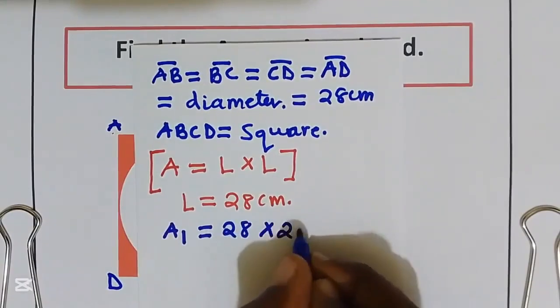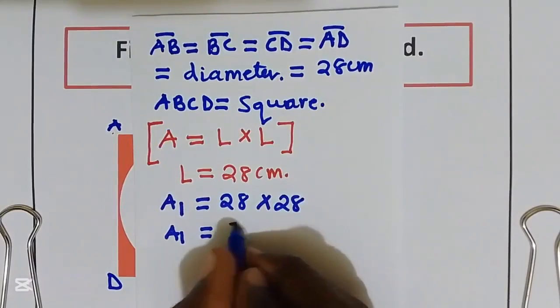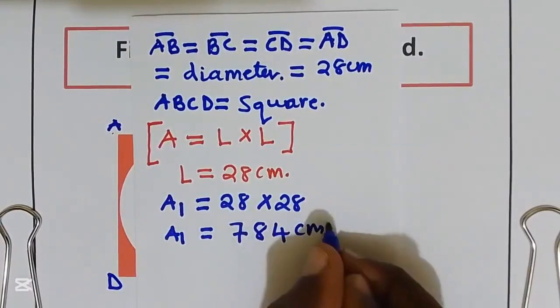Let's call area of the square area 1. So area 1 is equal to 28 multiply by 28. We get area 1 is equal to 784 cm square.